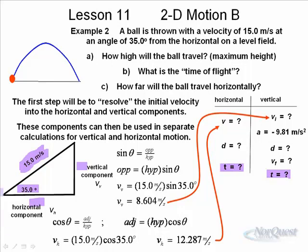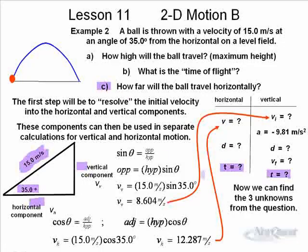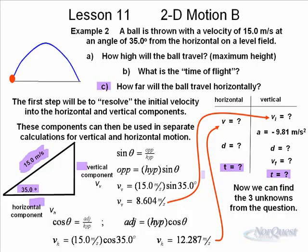To find the distance horizontally, we could figure out the time and multiply by our 12.287. Keeping that in mind, we can find all three unknowns. That is, we can find how high the ball will travel, what's the time of flight, and how far the ball will travel horizontally. Let's look at each of those three solutions.